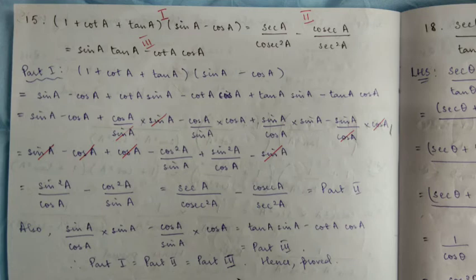So it's a third line: 2 is sin A minus cos A. So it's sin A, cancel, plus cos A. So this is cos A — it's not just cos A. So it's sin A by cos A minus sin A.